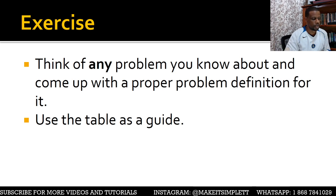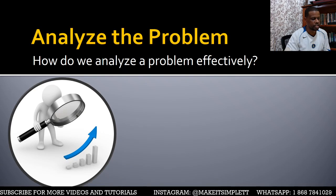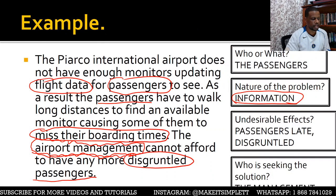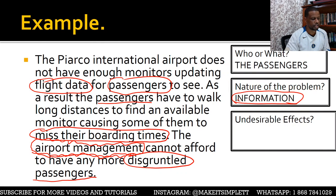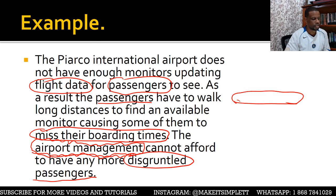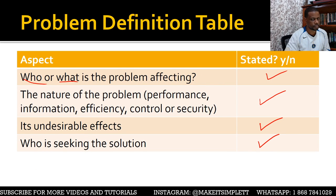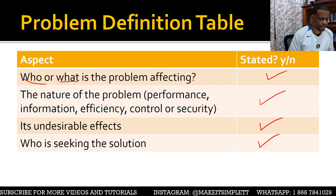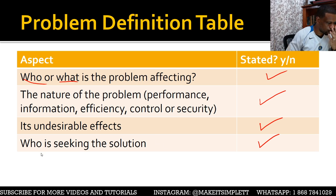Now let's try to come up with our own problem definition and use the table as a guide. Let's say for your IA you want to choose your school cafeteria.